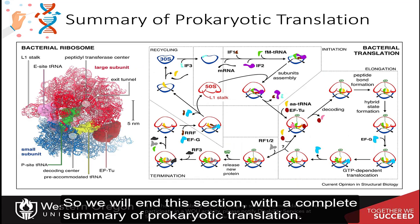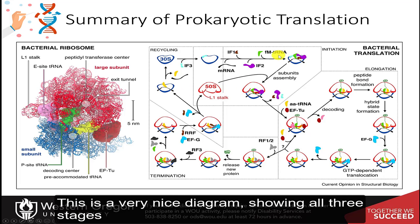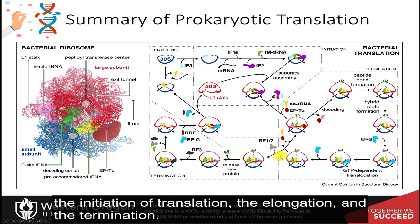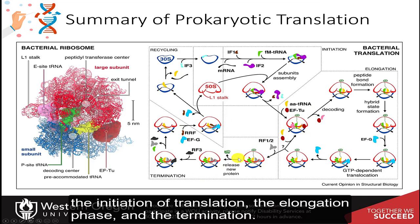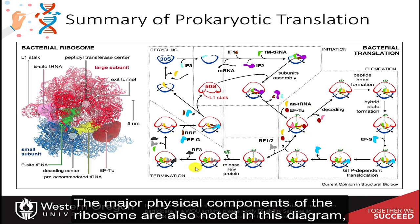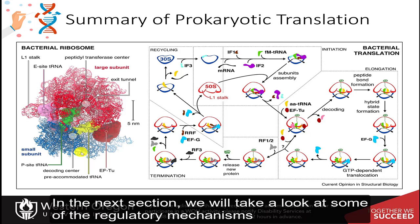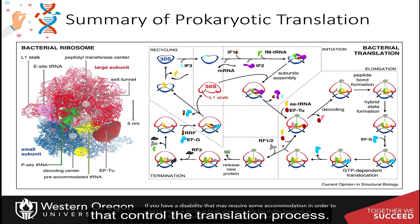We will end this section with a complete summary of prokaryotic translation. This is a very nice diagram showing all three stages of translation: the initiation, the elongation, and the termination. The major physical components of the ribosome are also noted in this diagram on the left-hand side. In the next section, we will take a look at some of the regulatory mechanisms that control the translation process.